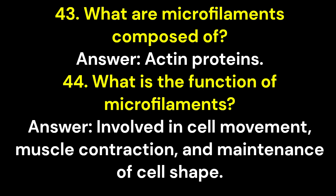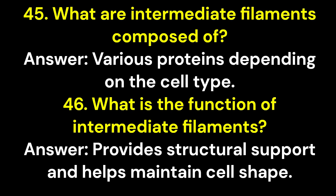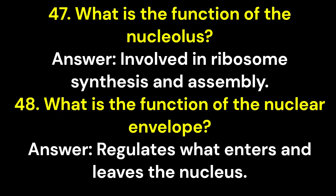43. What are microfilaments composed of? Answer: Actin proteins. 44. What is the function of microfilaments? Answer: Involved in cell movement, muscle contraction, and maintenance of cell shape. 45. What are intermediate filaments composed of? Answer: Various proteins depending on the cell type. 46. What is the function of intermediate filaments? Answer: Provides structural support and helps maintain cell shape. 47. What is the function of the nucleolus? Answer: Involved in ribosome synthesis and assembly.